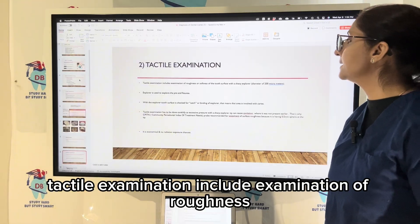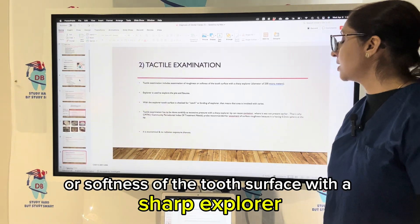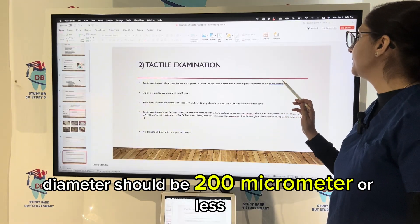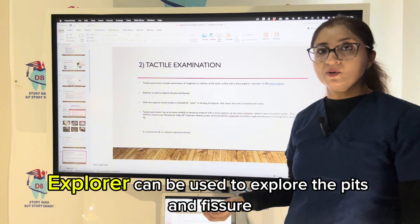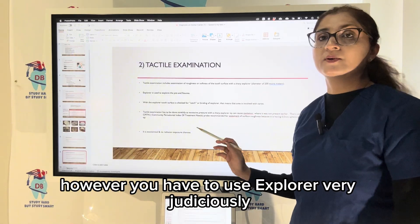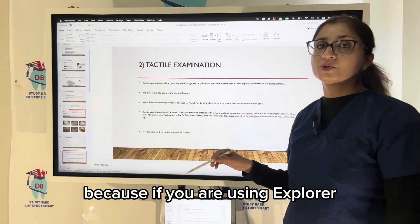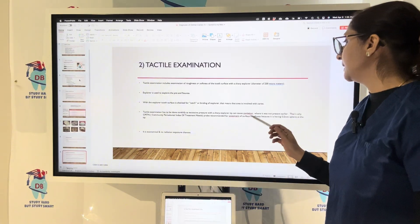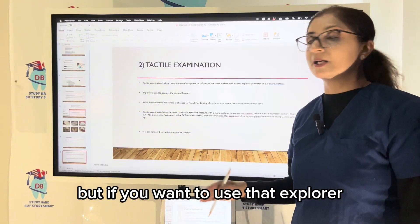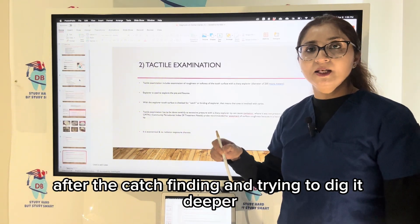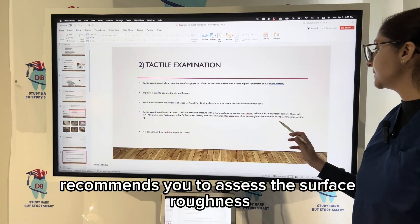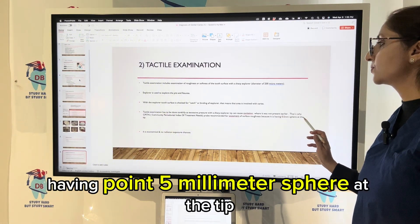Now we talk about tactile examination, which includes examination of roughness or softness of the tooth surface with a sharp explorer. The tip of the explorer diameter should be 200 micrometers or less. The explorer can be used to explore pits and fissures and to check for a catch or binding of the explorer. However, you have to use the explorer very judiciously, because if you use it with excessive tactile pressure, it can cause actual cavitation that was not there before. Use of a sharp explorer just up to catch finding is okay, but trying to dig deeper is not recommended. That is why CPIT recommends assessing surface roughness with an explorer having a 0.5 millimeter sphere at the tip.